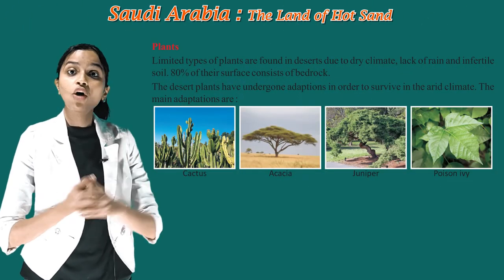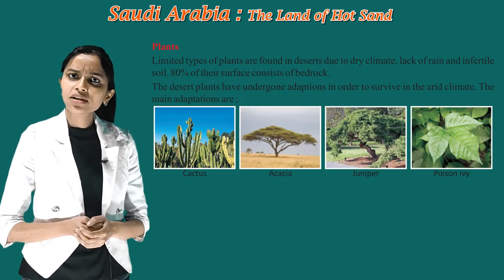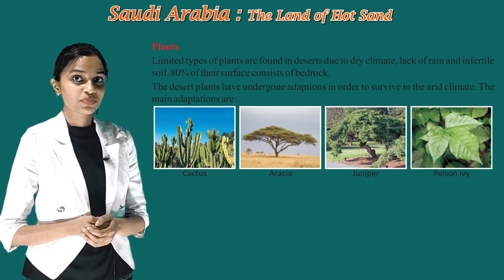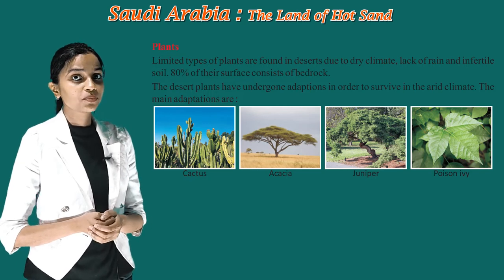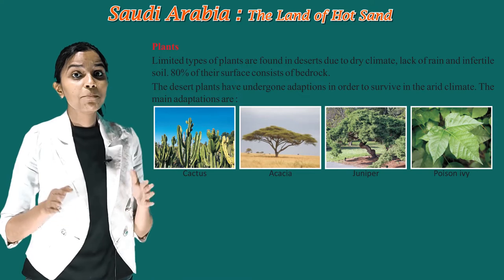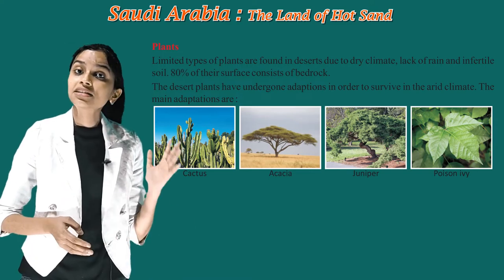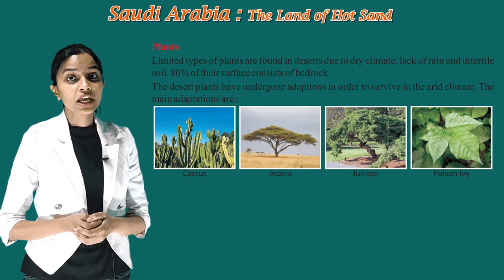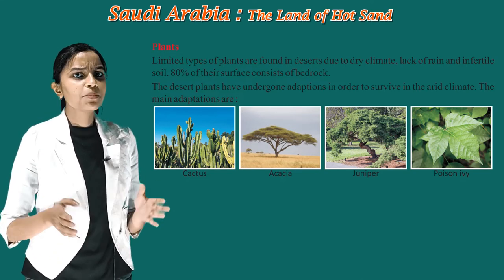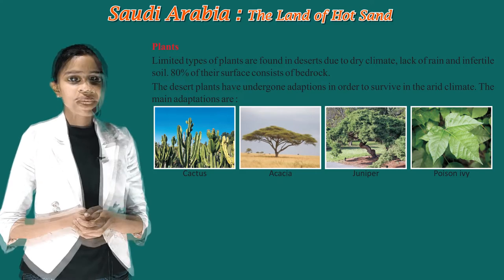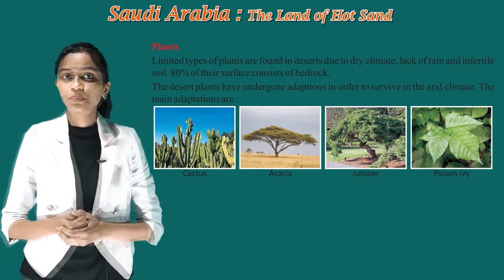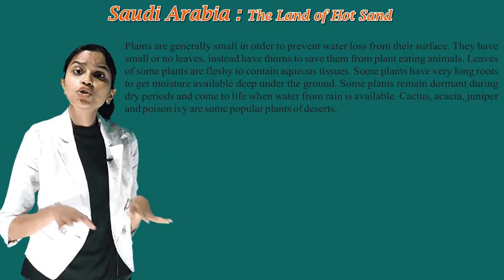Now we are moving towards the plants of the desert. Limited types of plants are found in deserts due to dry climate, lack of rain, and infertile soil. About 80 percent of their surface consists of bedrock. Desert plants have undergone adaptations to survive in the arid climate. The main adaptations are seen in cactus, acacia, juniper, and poison ivy.